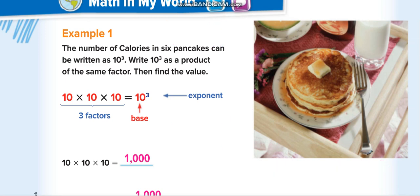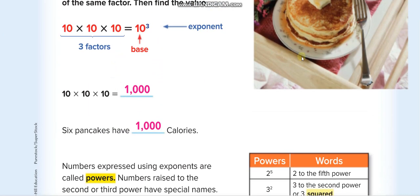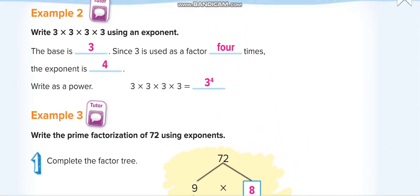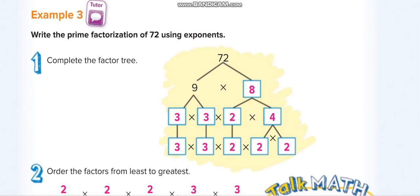I hope you guys understand. Let's move to the next example. We have 3 times 3 times 3 times 3 — how many 3s? That's 4. So the base is 3 and the power is 4. This is how we write it.